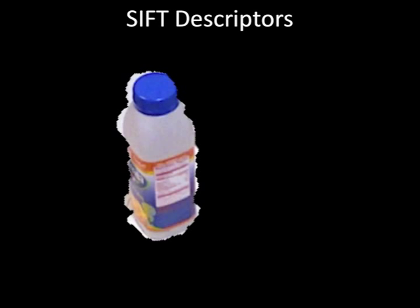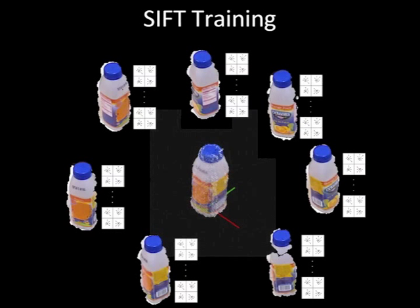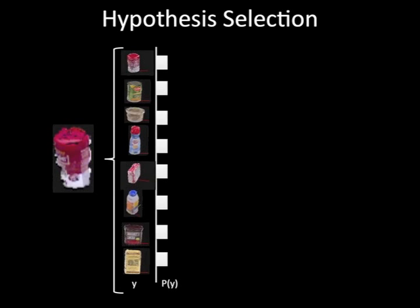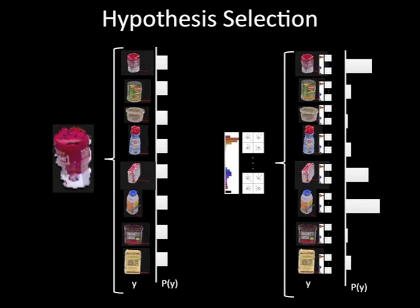We also extract local image descriptors, so we look for distinctive SIFT key points and extract SIFT descriptors. At training time, we again extract these descriptors from training images taken from all different views of the object. So, given a test instance, we start with a uniform prior over all object labels. We extract a hue histogram and SIFT features, and we can use our model to compute the posterior probability of each class using the features extracted at test time. This gives us a ranking of all the object hypotheses from high to low probability.